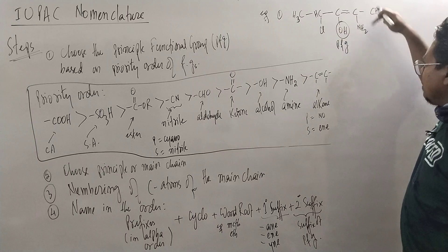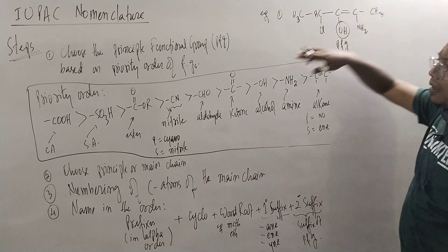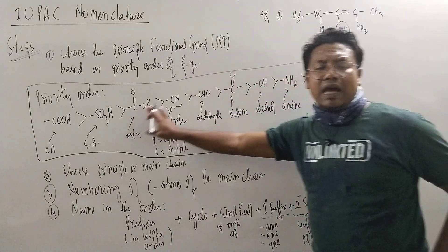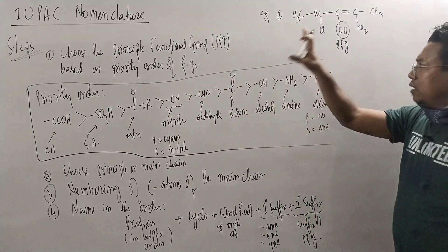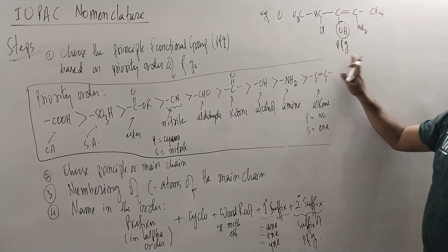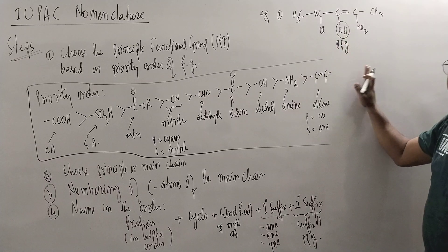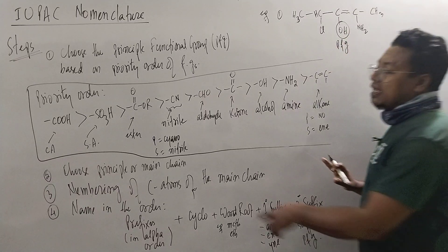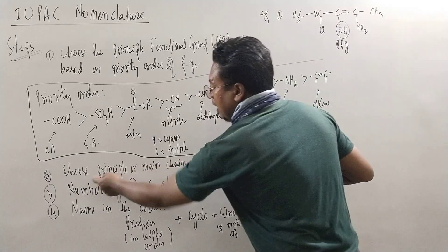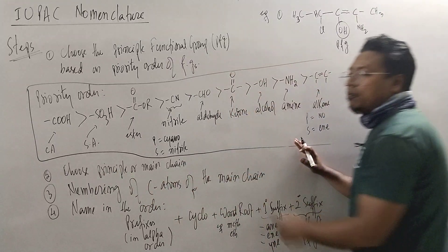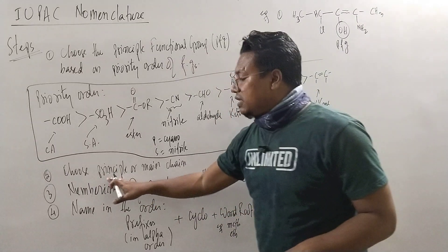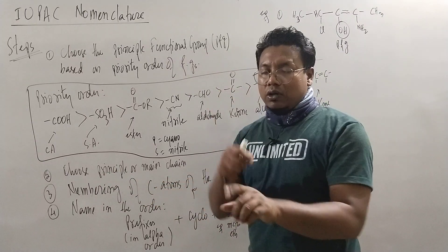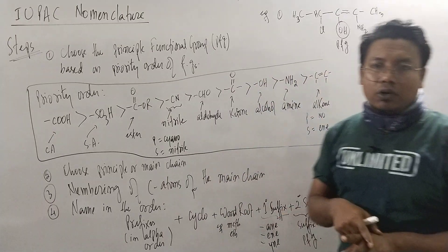This is the prefix, then cyclo, then word root, then primary suffix, then secondary suffix. This is the principal functional group. The principal and main chain is the principle chain.